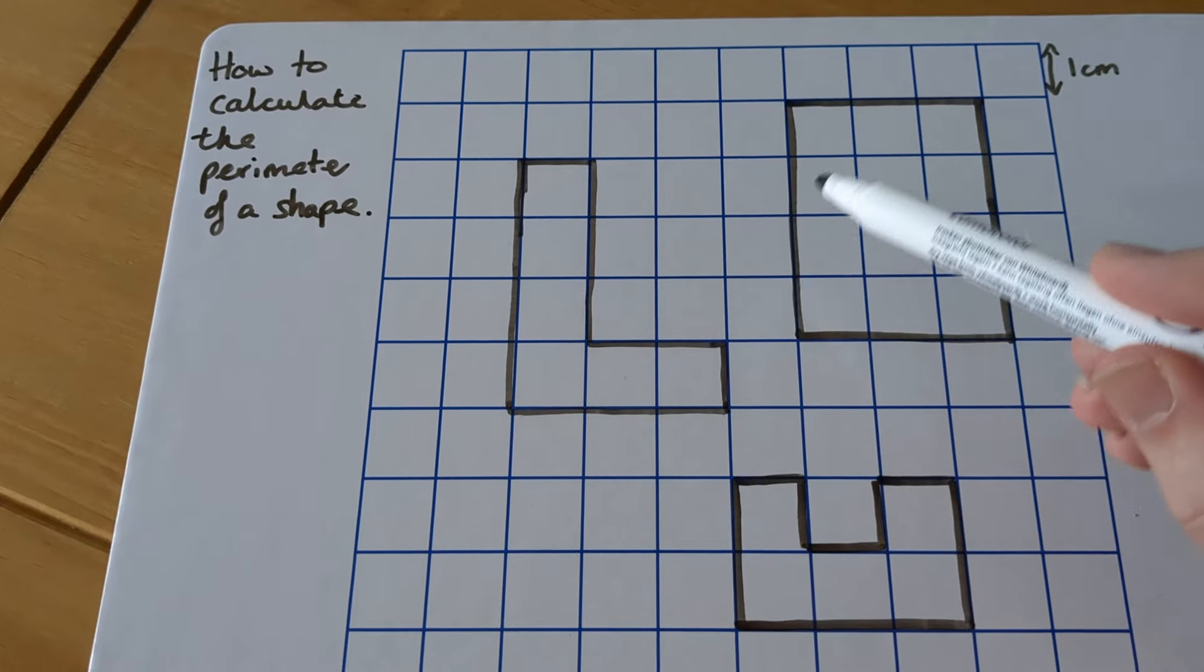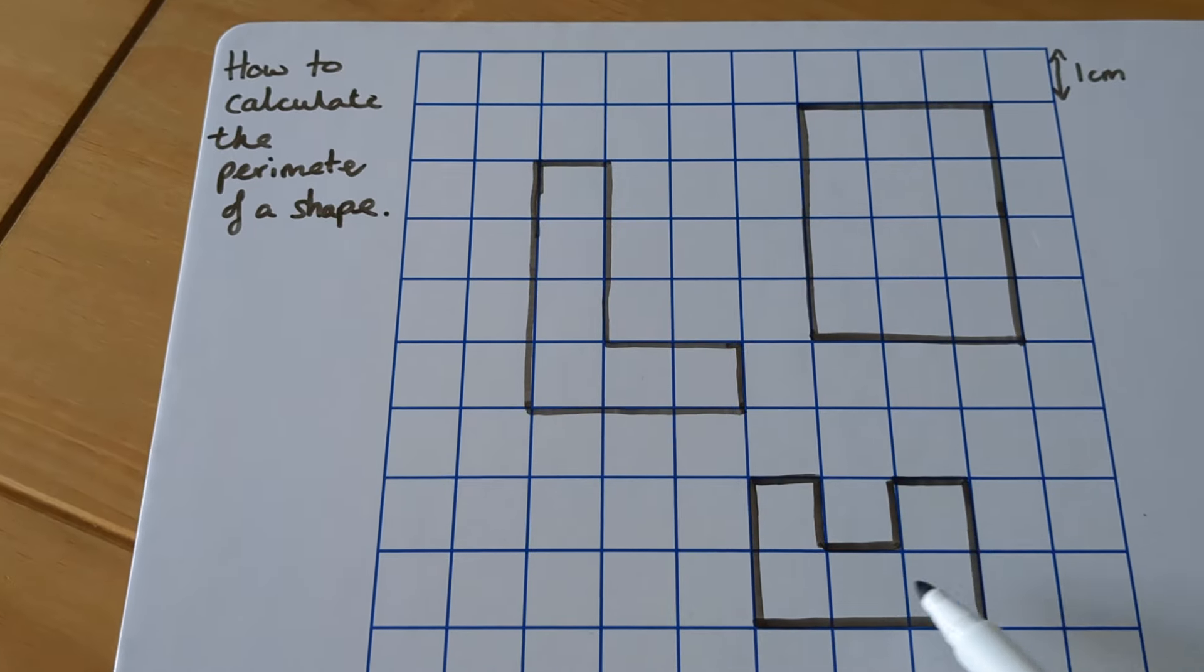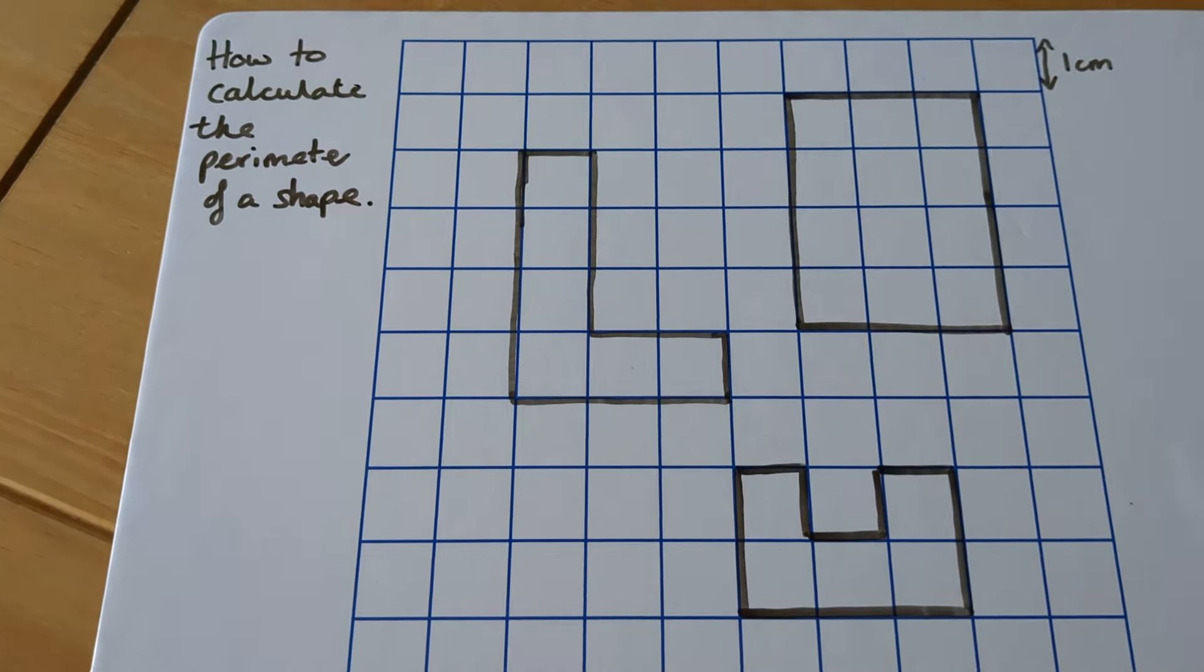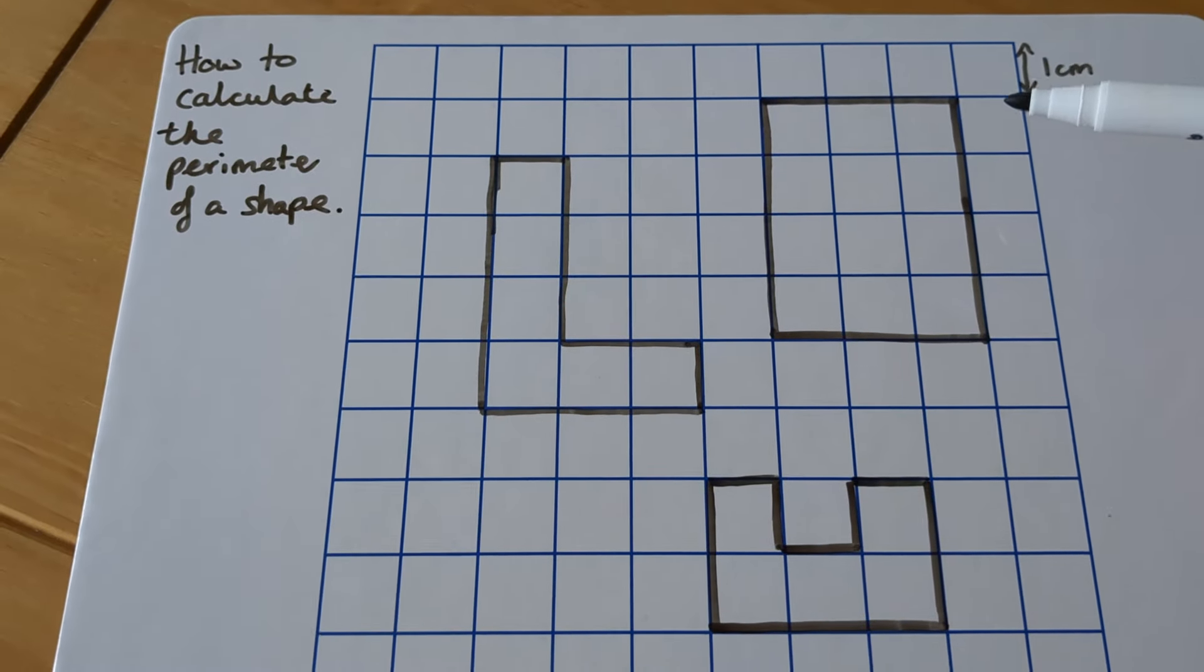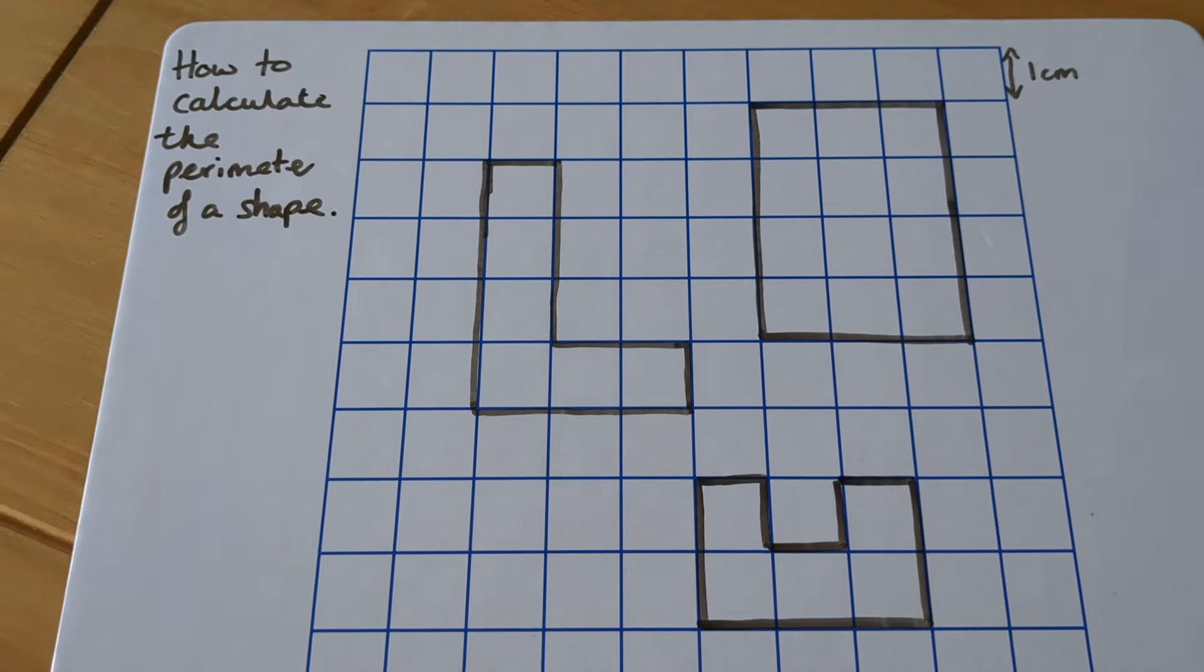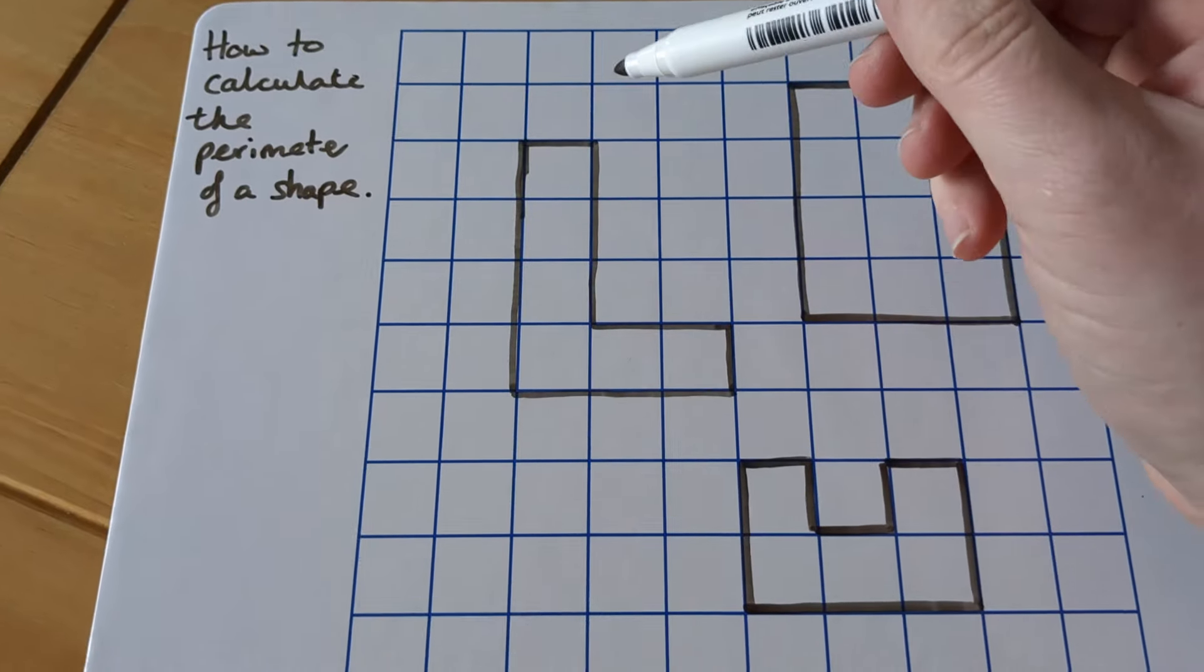The inside of the shape is called the area. So everything on the inside makes the area of the shape, but that's something for a different day. At the moment, we're just focusing on the perimeter. With shapes like this, we have squares. This tells us that each square is one centimeter long. So to work out the perimeter, I'm going to go around and count the squares.